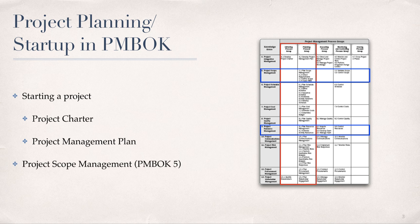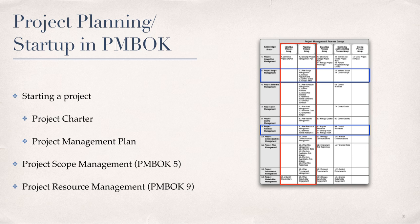Our focus in this module is on introducing the six PMI process standards for project scope management, which is PMBOK chapter five, along with the six PMI process standards for project resource management, which aligns with PMBOK chapter nine. Starting a project also relies on the three PMI process standards for project communications management, which were introduced in module five.